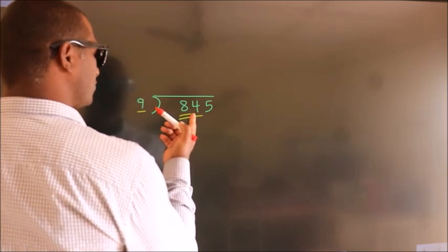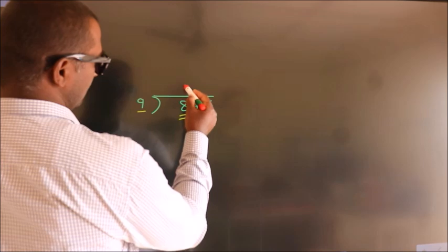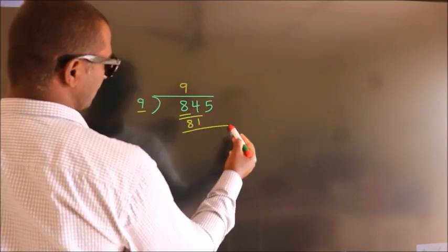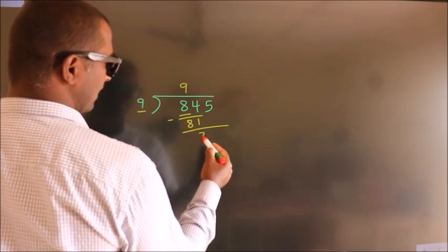A number close to 84 in the 9 table is 9 times 9 equals 81. Now we subtract and we get 3.